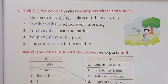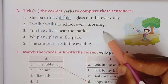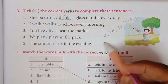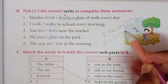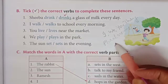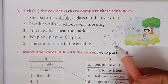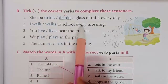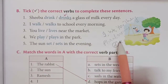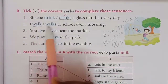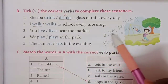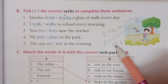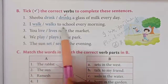Dear children, one more thing to remember: when we use I, we, you, they, or plural nouns, we do not use 's' with the verb. So let us see the second one: I walk or walks to school every morning. With 'I' we do not add 's,' so the answer is 'I walk to school every morning.'